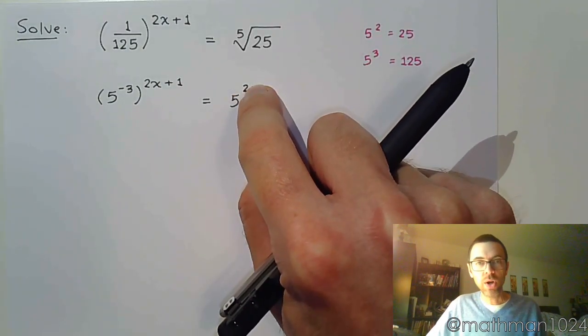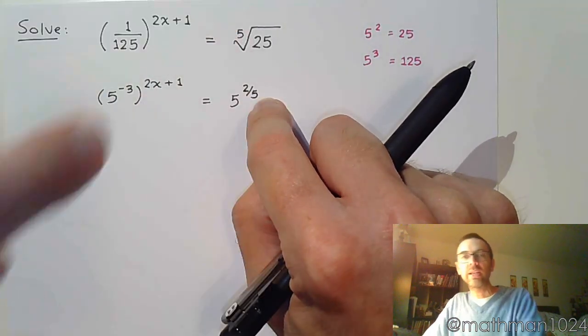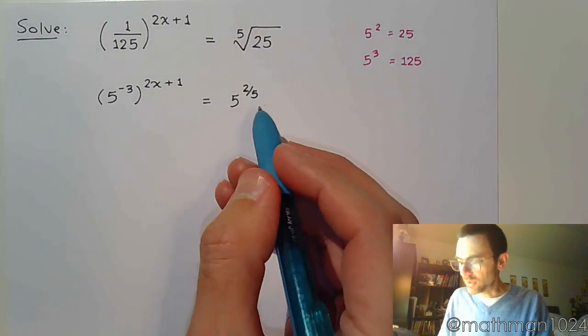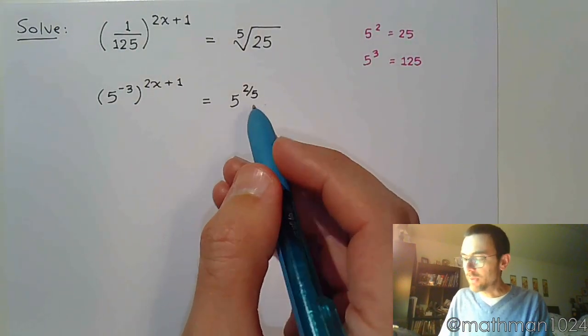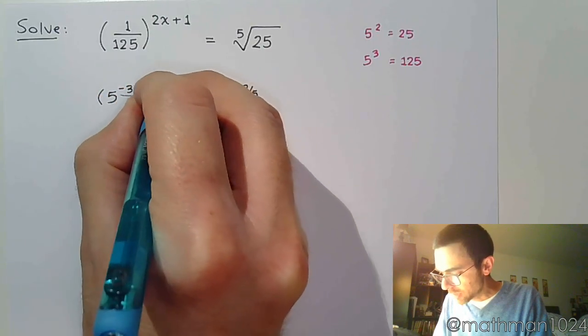So the 5 squared is the 25, that denominator of 5 is the index of 5 that we see right there. So we have to rewrite it from a radical form into an exponential form, and there's really nothing else to do on the right side. We've got to work on the left side.